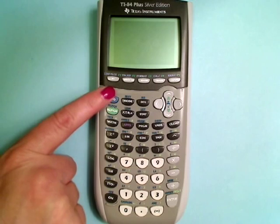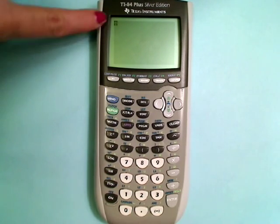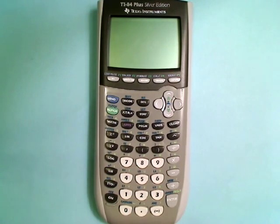And so what that means is to turn off this calculator, we press the second button, and then we press the on button to do what that blue text is. The second button is blue, so when we press second, we see that we have basically like a shift kind of look to the cursor. We press the on button, and the calculator turns right off.